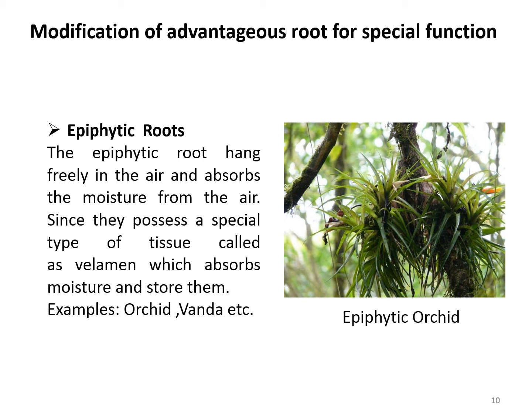Another type of adventitious roots are epiphytic roots. Some plants develop special aerial hanging roots called epiphytic roots. These roots are spongy and hygroscopic in nature, meaning they absorb moisture from the air. They possess a special tissue called velamen, which is a covering membrane that absorbs and stores moisture. Examples are orchid and others.